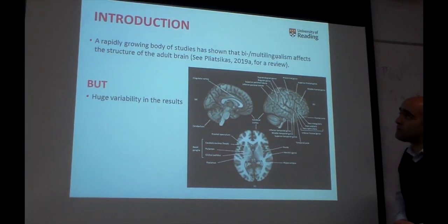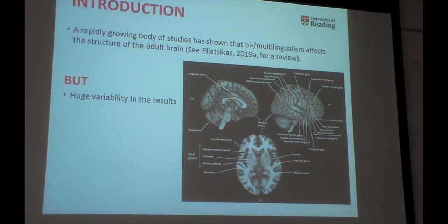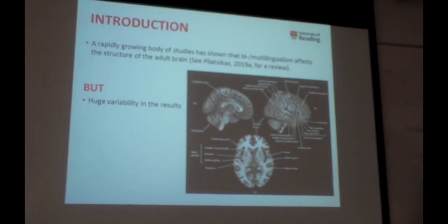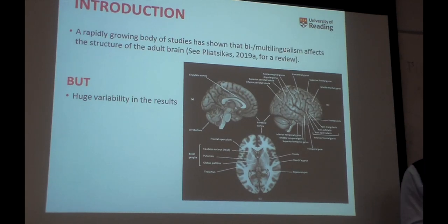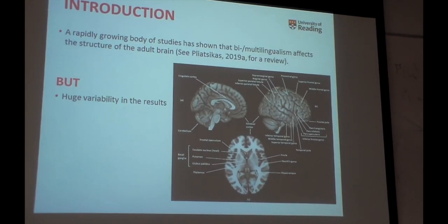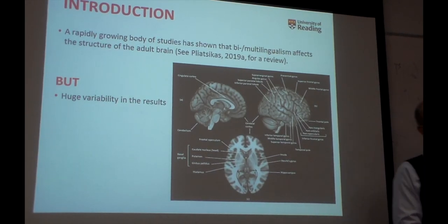Those of us that are crazy enough to still work on bilingualism and brain structure know that there's a lot of evidence available now telling us that speaking more than one language has structural effects on the brain. There's nothing about function in my talk. There's something about 50 or 60 studies available since 2004, I think was the first one. There's huge variability in the results, in what has been reported.